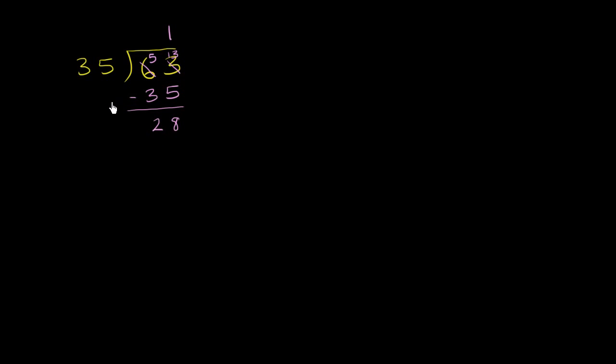So you could just say, hey, 63 divided by 35, let me write this. You could say 63 divided by 35 is equal to 1 remainder 28.